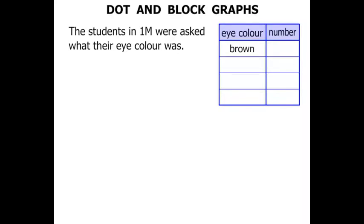For brown there were seven students. For blue there were six students. For grey there were two students, and for green there were four students.